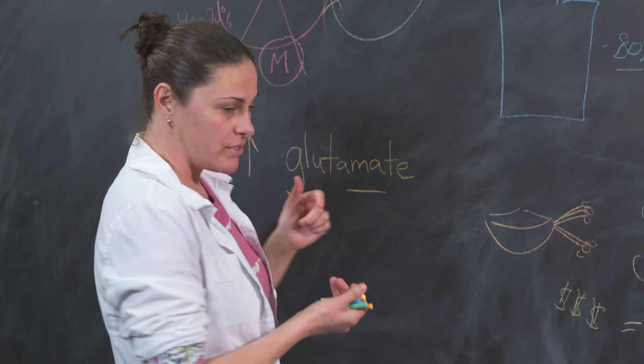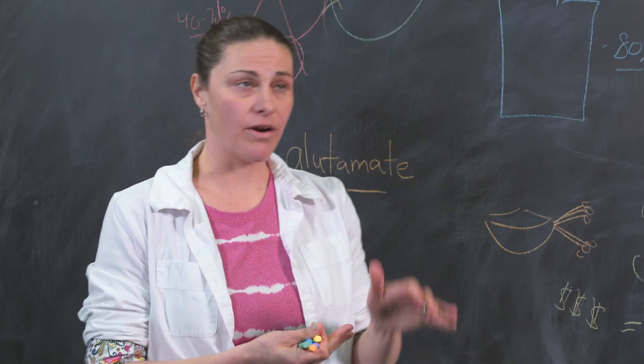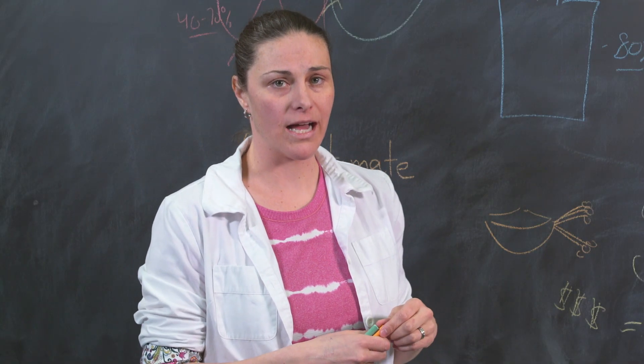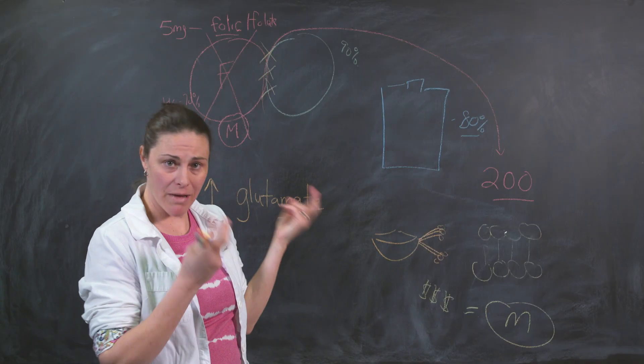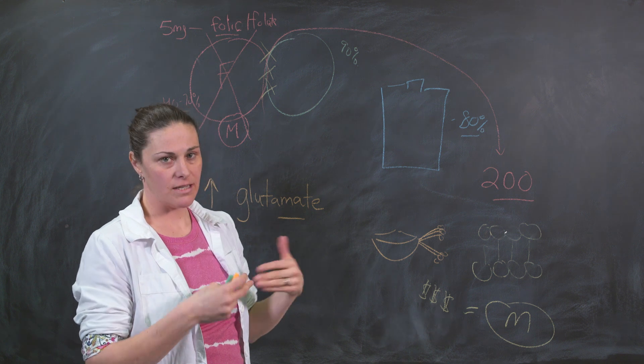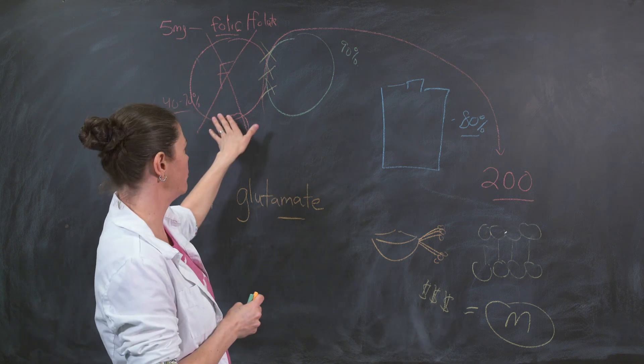The grain-free diet pulls out not just gluten, but corn and rice, anything that has synthetic folic acid that's been fortified into it. By putting kids on this diet, sometimes it's called paleo or gaps diet or SCD, they all function to improve the folate cycle.